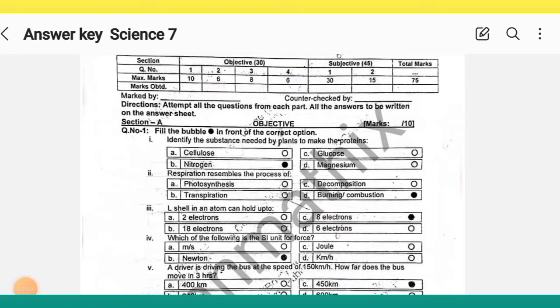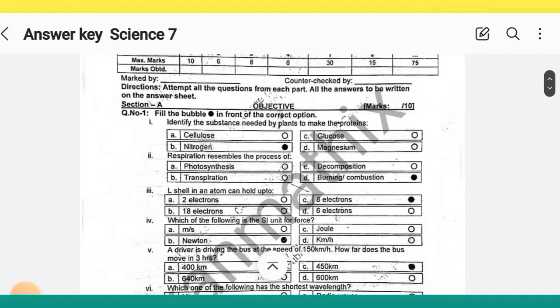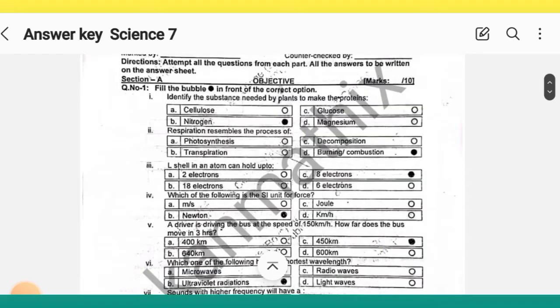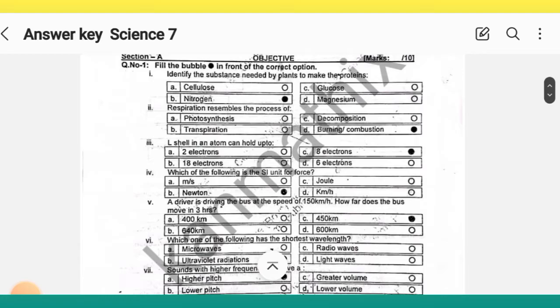Assalamu alaikum guys students, hope you all are fine. I'm sharing answer key of Science paper for grade 7. Total marks of the paper 75. Section E MCQs: number 1 correct option is B, MCQ 2 correct option is D.